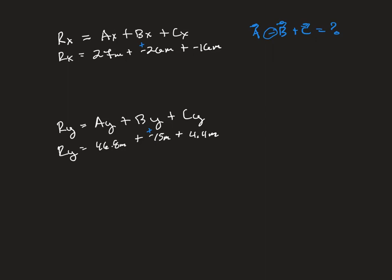I also want to briefly discuss multiplying by a scalar quantity. If we wanted to compute vector A plus 3 times vector B plus vector C, instead of flipping signs we multiply each of vector B's components by 3: 3 times −26 and 3 times −15 meters, then continue with the component method. This only works when multiplying by a scalar number. If you want to multiply two vector quantities together — vector A times vector B — that's a completely different operation we'll cover in a later lecture video.